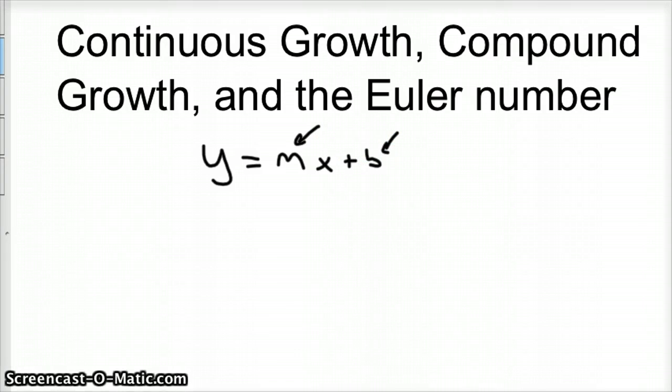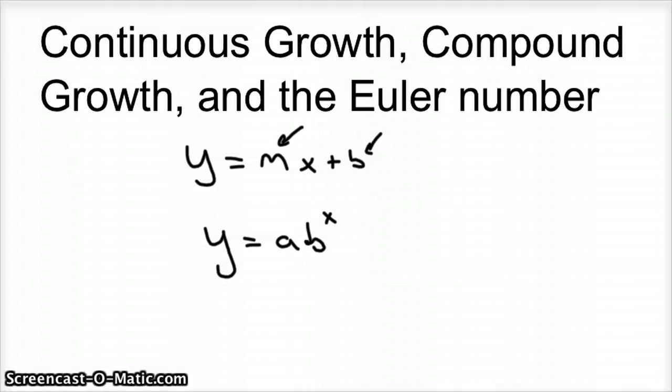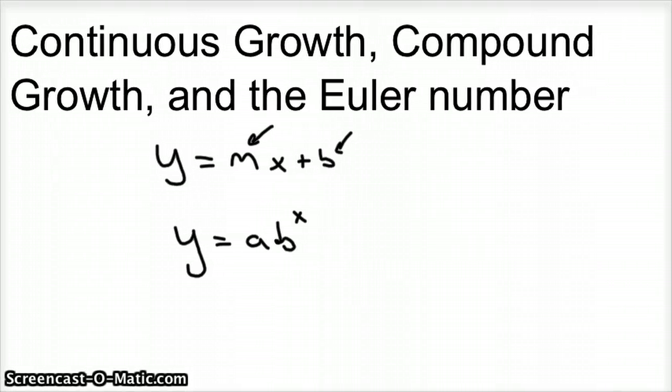If you're studying continuous growth and compound interest and the Euler number, you've probably got a pretty good handle on that. But exponential growth is basically when the exponent is your variable x. So just like y equals mx plus b is the one for linear, y equals a times b to the x is the one for exponential growth. That's the most basic form, and I'll show how that varies as we go.